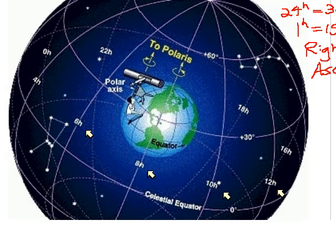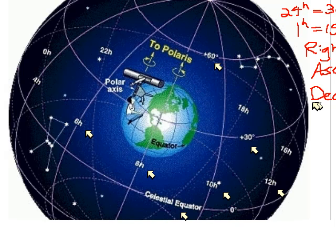The latitude lines on this graph are shown in degrees, just like we measure latitude on Earth. This one is 30, this one is 60, and the celestial equator is at zero degrees. Anything north of the equator is measured in positive degrees; anything south of the equator is measured in negative degrees. The latitude is referred to as declination. Sometimes you'll see these abbreviated as RA for right ascension and DEC for declination.